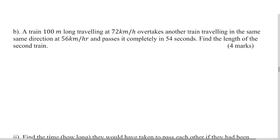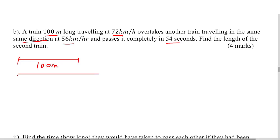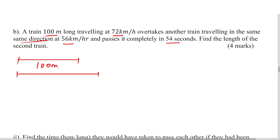Now, a train 100 meters long traveling at 72 kilometers per hour overtakes another train traveling in the same direction — note this, traveling in the same direction — at 56 kilometers per hour and passes it completely in 54 seconds. Let me begin by drawing the setup: this is the first train, which is 100 meters long. It overtakes the second train.